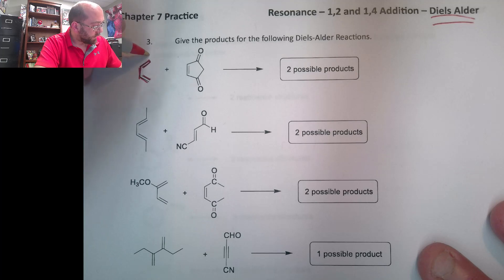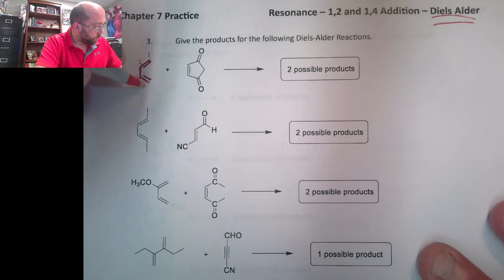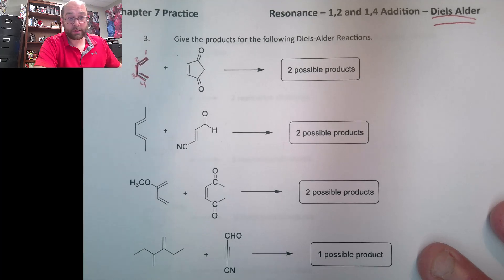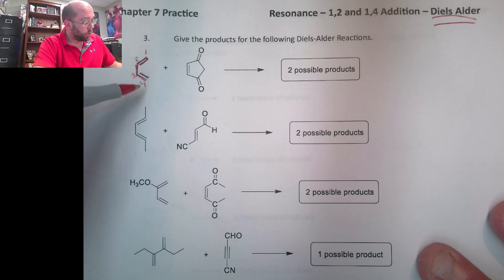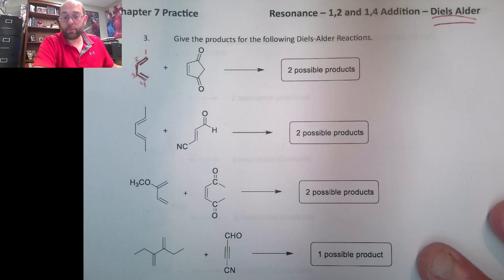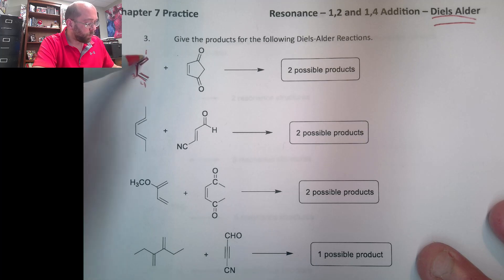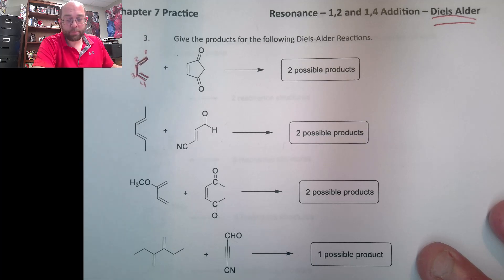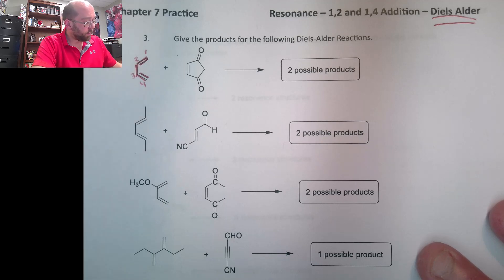These are always going to act as 1-2-3-4. You could number one down here — it doesn't really matter — and a lot of these have some level of symmetry to them. We'll get into that as we go, but you're looking for four carbons where you have a double, single, double.